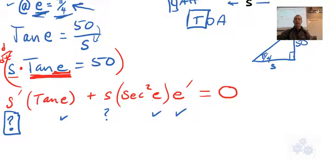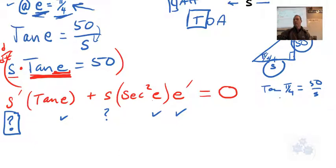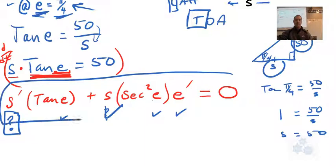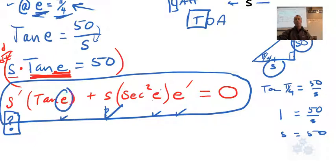At e equals pi over four — that's 45 degrees — this is a 45-45-90 triangle, so both legs are equal, meaning s equals 50. Or you can verify: tan(pi/4) equals 50 over s. Tan of pi over four is sine divided by cosine, which is root-two-over-two divided by root-two-over-two, which equals 1. So 1 equals 50 over s, giving s equals 50. So at the specific instant when e is pi over four, s is also 50. Now I have everything I need to find s prime.